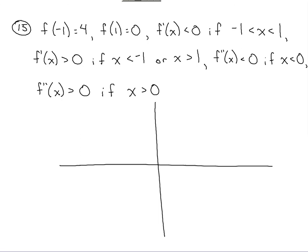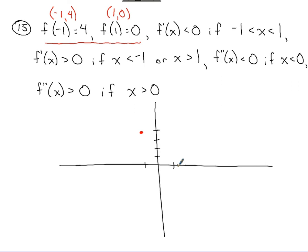Starting with given information about the function: we've got a couple of items here. If f of negative 1 equals 4 and f of 1 equals 0, that gives us some specific points we can plot — x is negative 1, y is 4; x is 1, y is 0. We could plot those two points. That's all we've got to play with from the original function information.